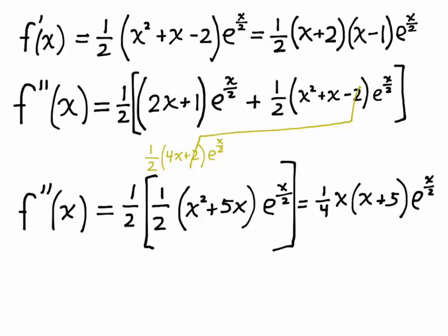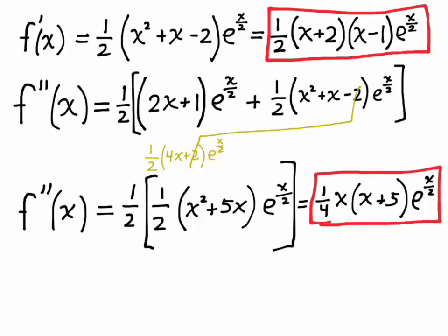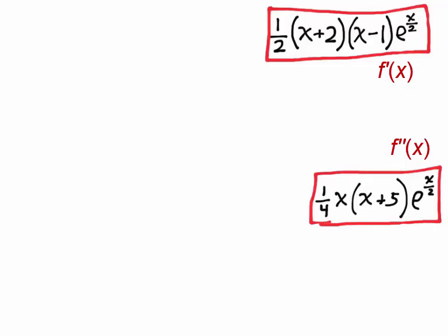Now that we have the factored form for f prime of x and the factored form for f prime prime of x, we can use those to find where the first derivative and where the second derivative, respectively, are positive and negative. So I'll make a sign chart, and the sign chart is going to have the values negative 5, negative 2, 0, and 1 as the relevant x values. Negative 5 from this factor in f prime prime, negative 2 from this factor in f prime, and so on.